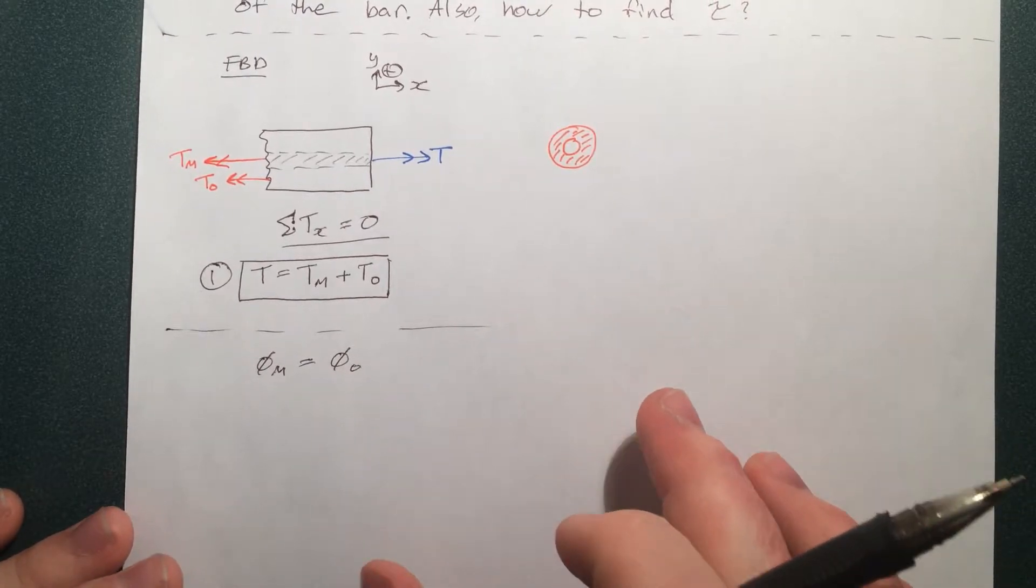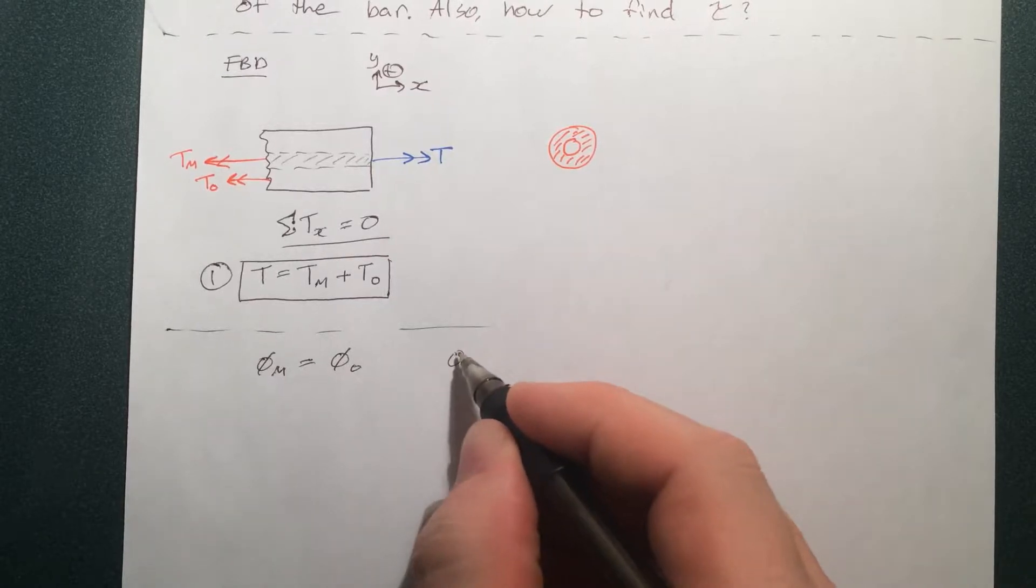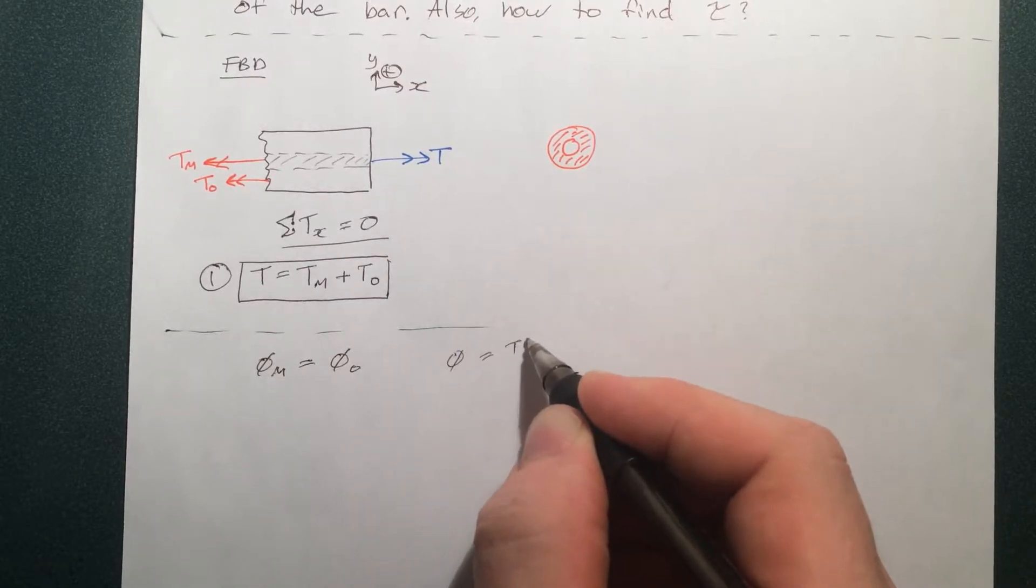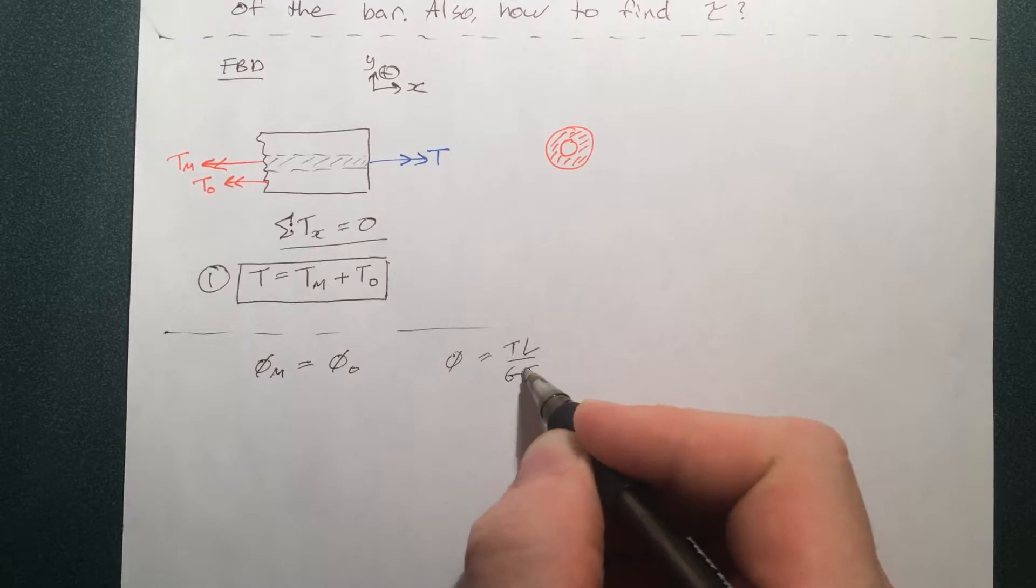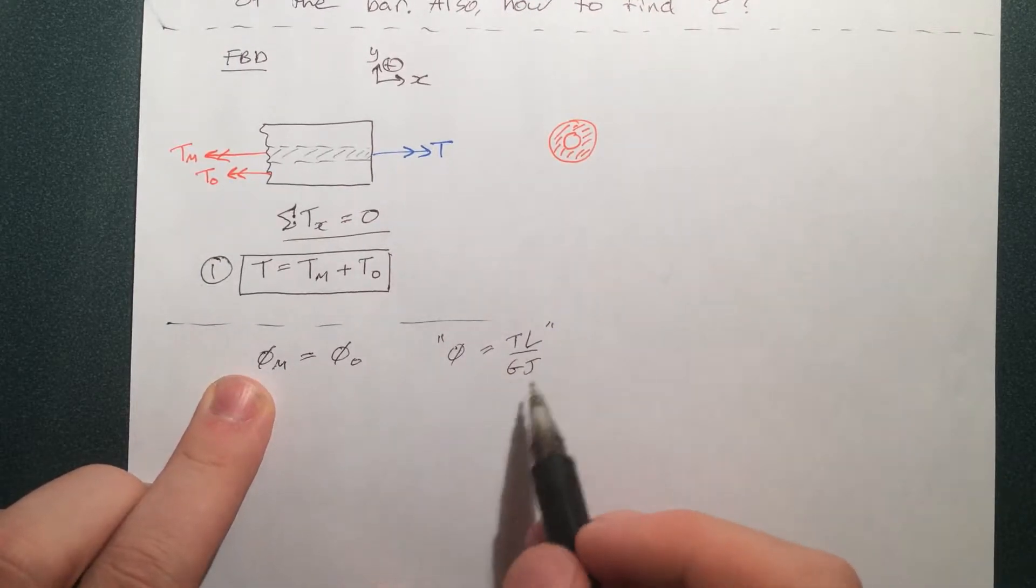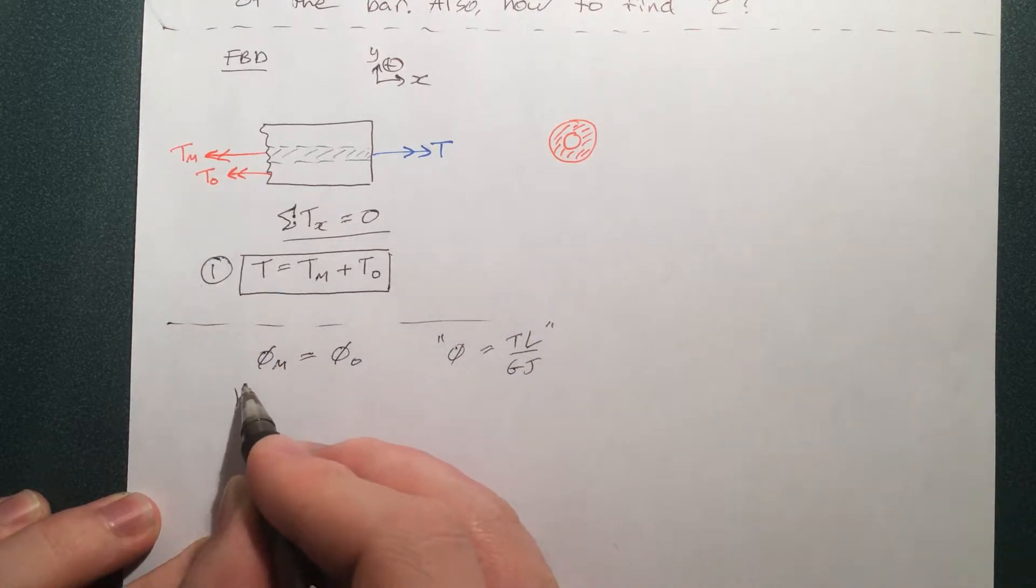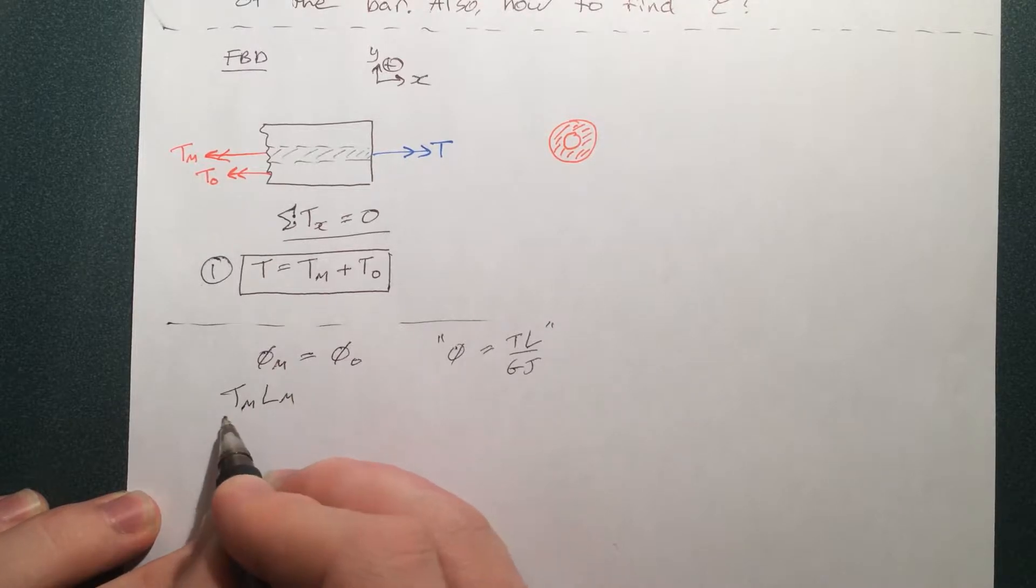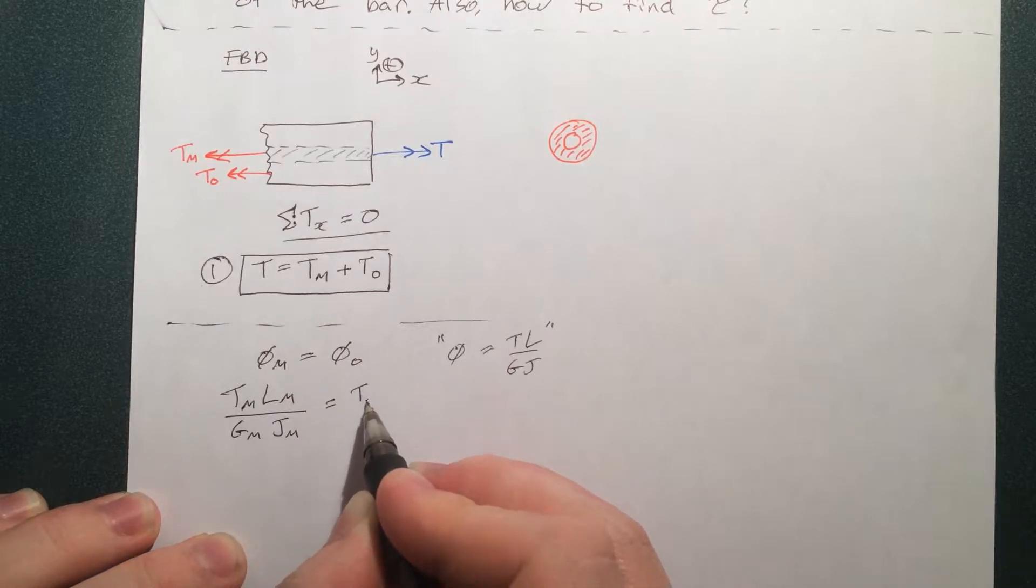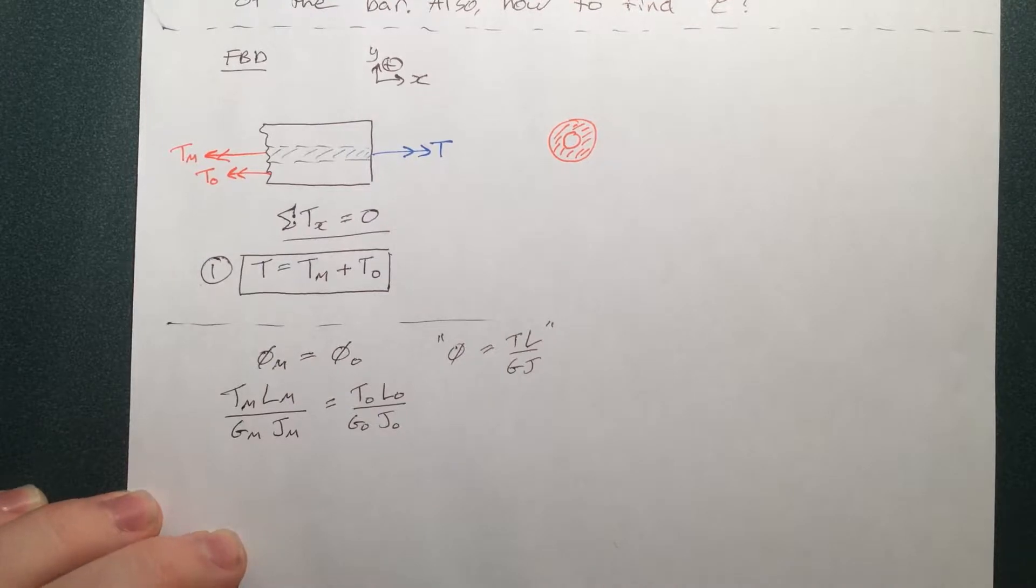And from there we can write, because we know that phi in any piece is due to the torsion, length, and GJ. So of course the phi in the middle piece is due to the properties of the middle piece and the same for the phi of the outside. So we can write that.